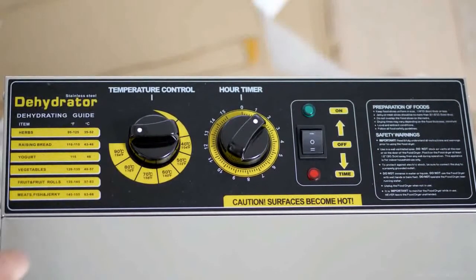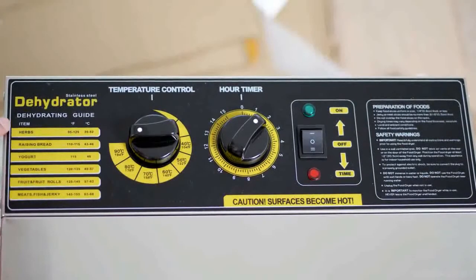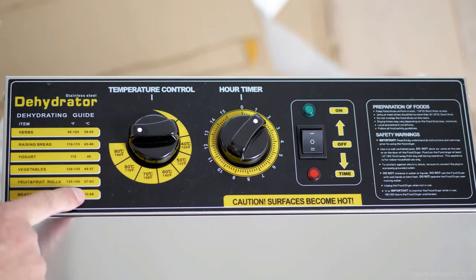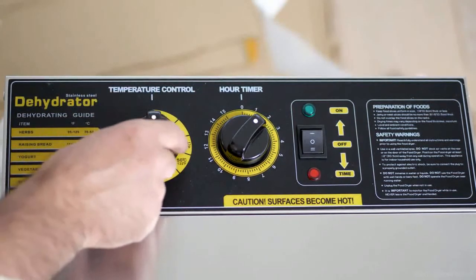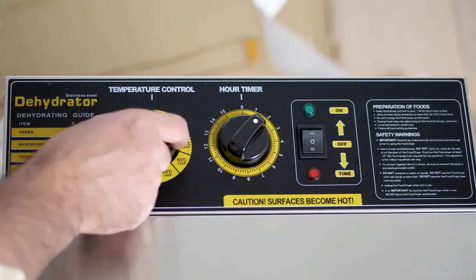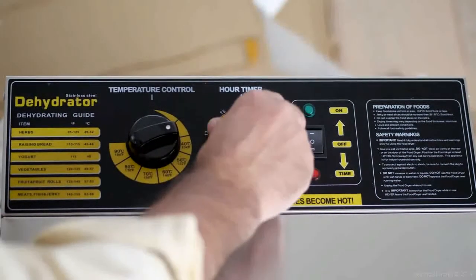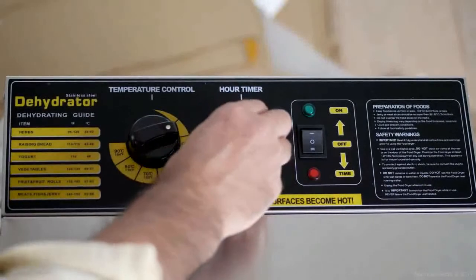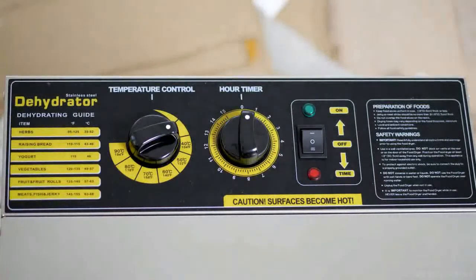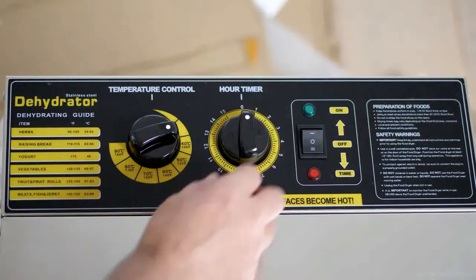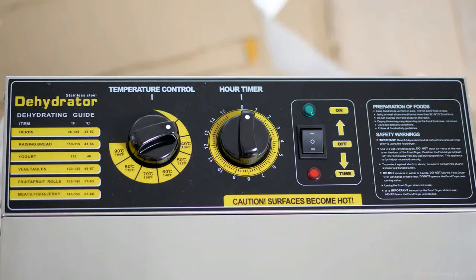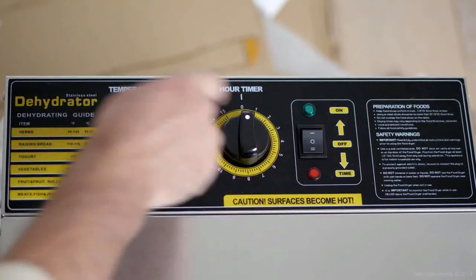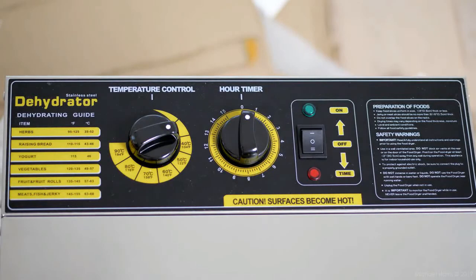Here we have all the herbs, raisin bread, yogurt, vegetables and the corresponding temperature that you have to dehydrate them. Here is the knob to put the temperature. Here is a timer, you can put it to 15 hours which is not so long because normally sometimes with low temperatures you can go up to 24 hours in the dehydrator, but I guess then you have to press it twice. And of course here is the on-off switch and timer mode.